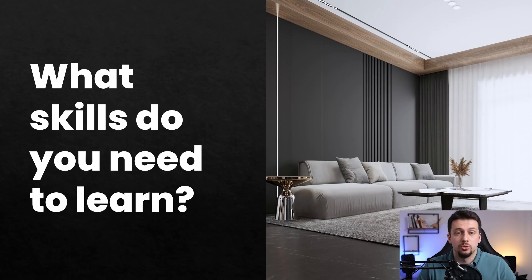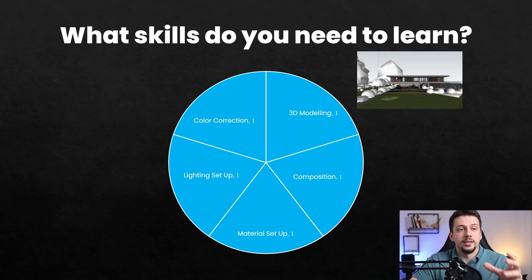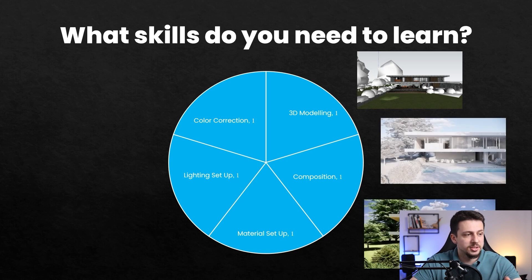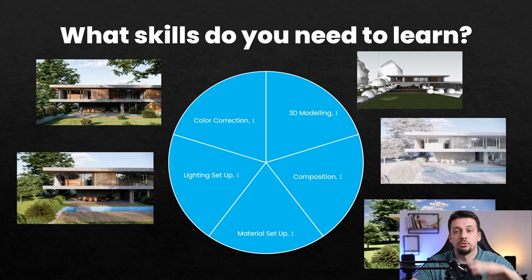Let's talk about what skills you need in order to learn rendering. There are a few basic ones that you should get in chronological order: 3D modeling in SketchUp, then composition, then material setup, lighting setup, and color correction. These are the major components, and within each of these there are other minor components that make up all of these different categories.